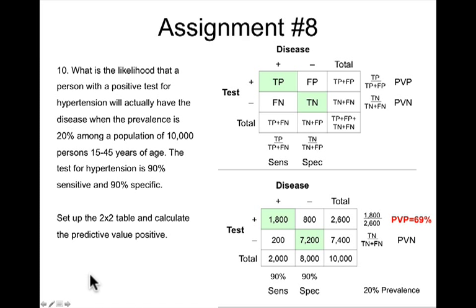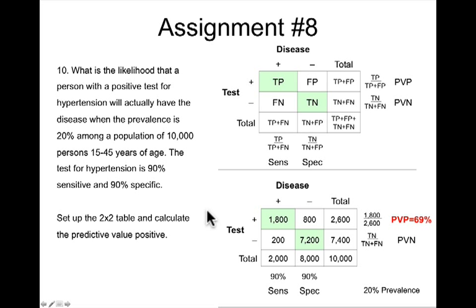Question number 10: What is the likelihood that a person with a positive test for hypertension will actually have the disease when the prevalence is 20% among a population of 10,000 persons 15 to 45 years of age? The test for hypertension is 90% sensitive and 90% specific. We use this information to set up our 2x2 table and to calculate the predictive value positive. We know that there are 10,000 people total in the 2x2 table.